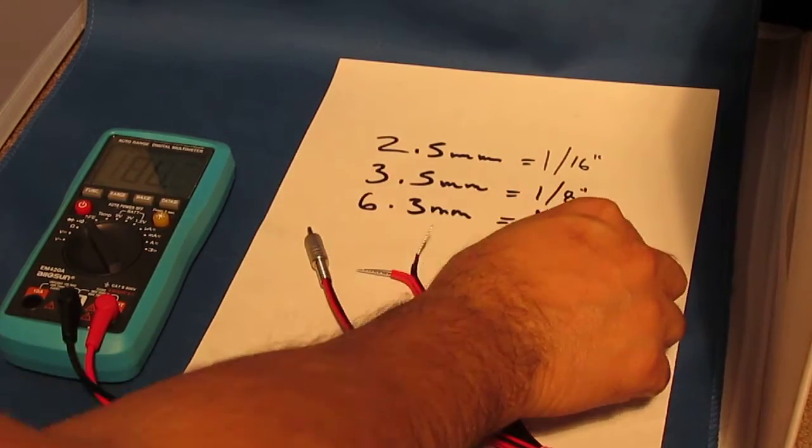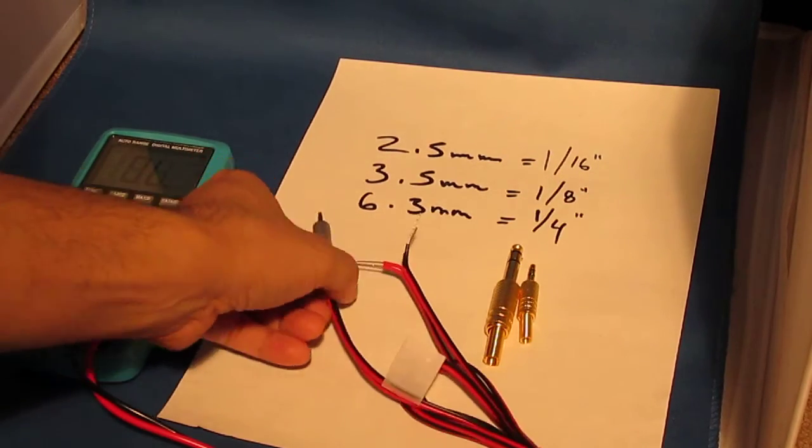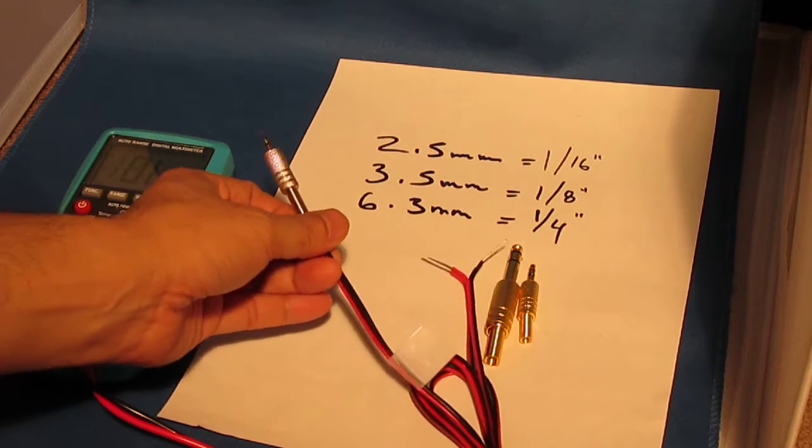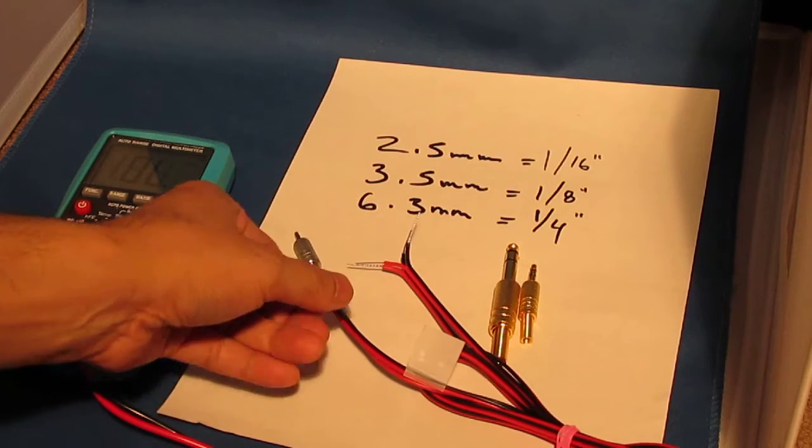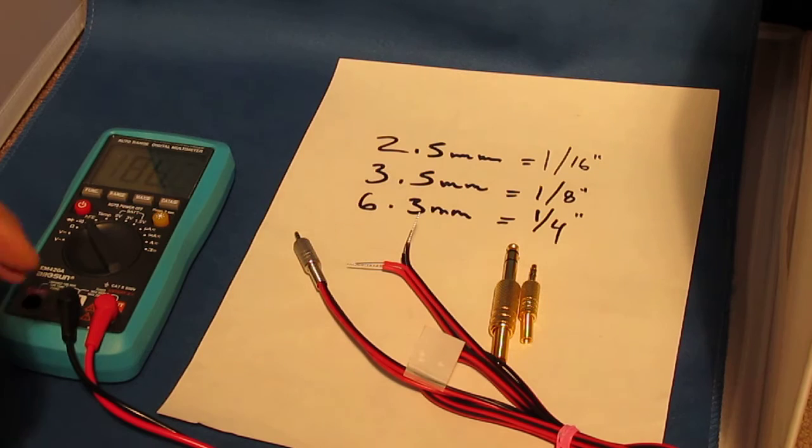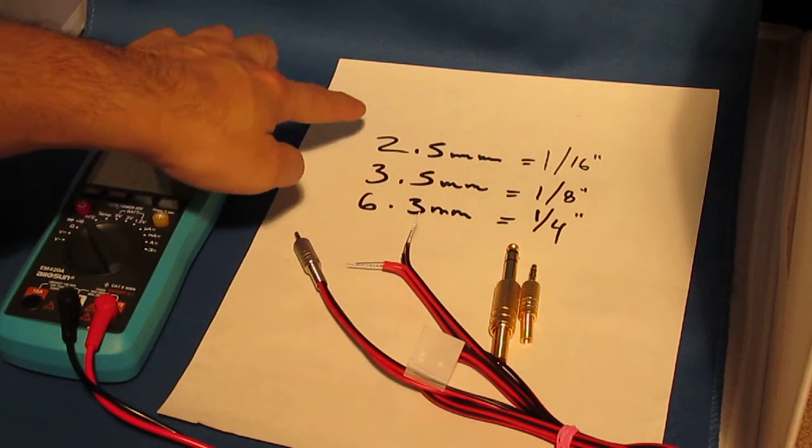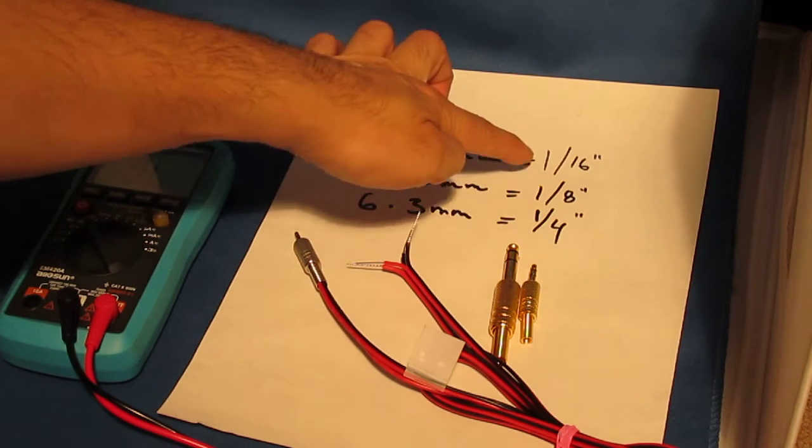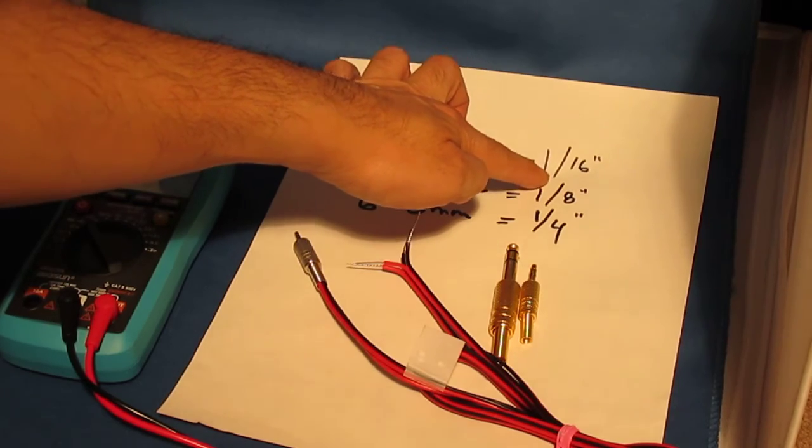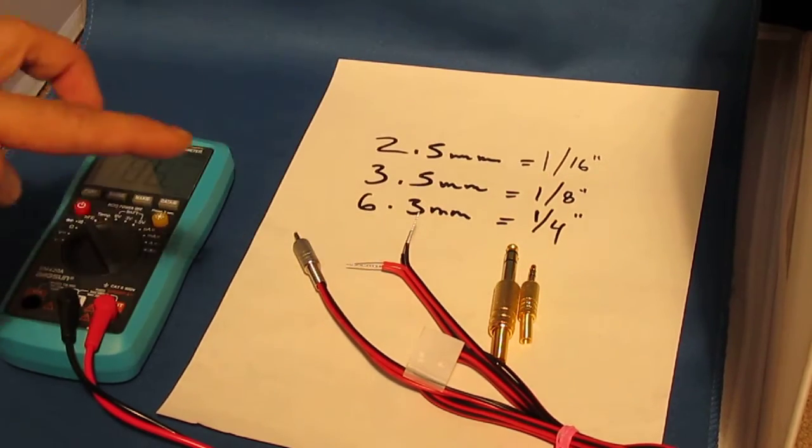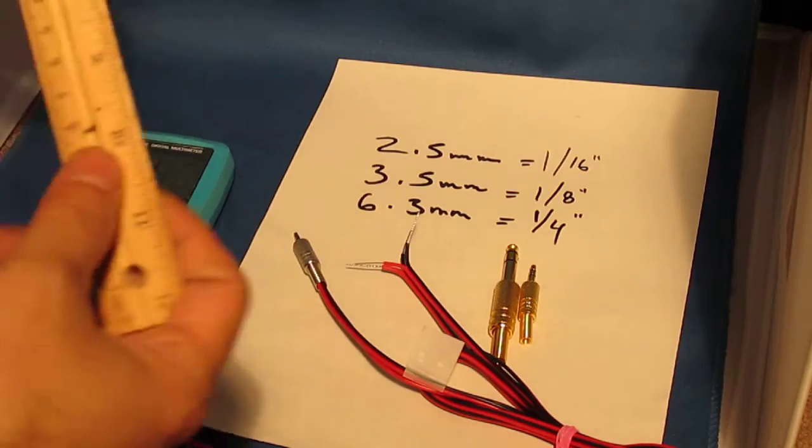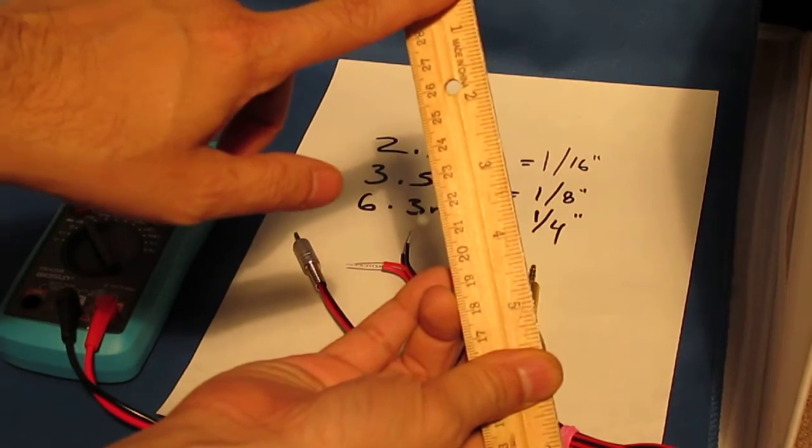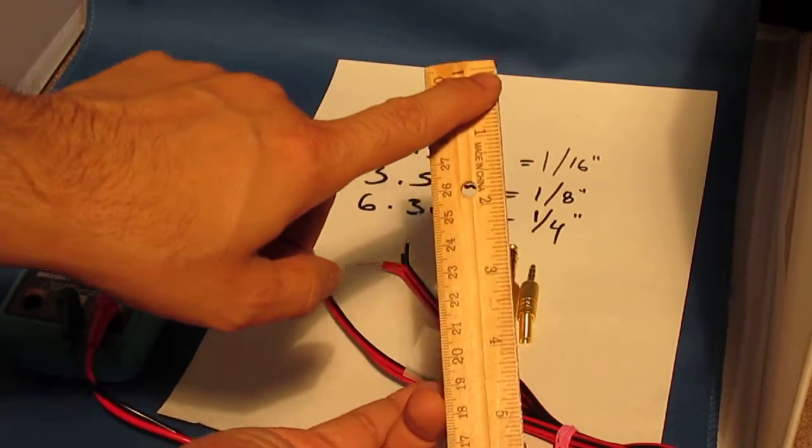First and foremost, it's the smallest one here, which is shown here. This is actually for like the iPad, and this is the 2.5 millimeter, which is 1/16th of an inch. If you use your ruler, 1/16th of an inch is only right there.